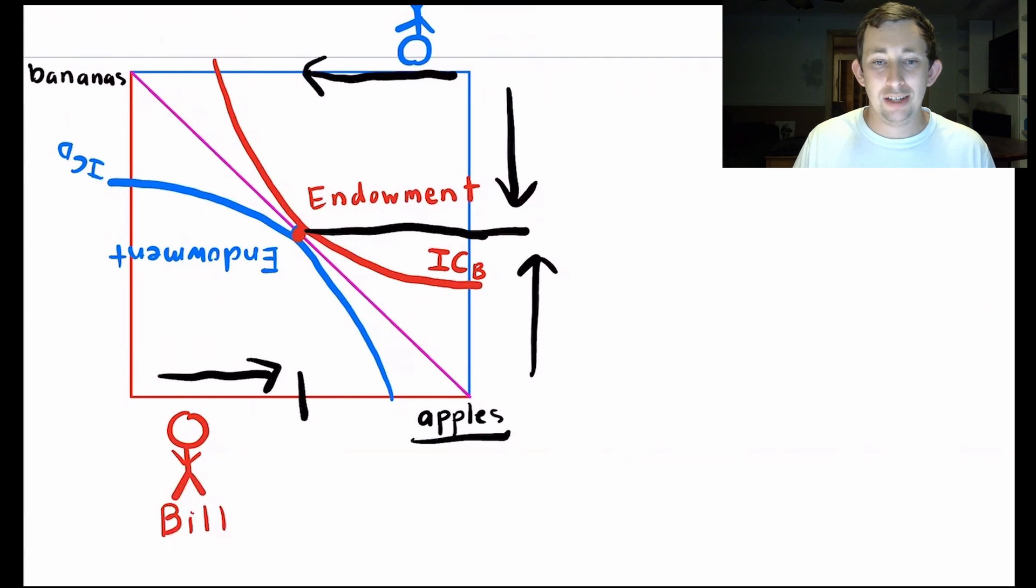So that is how I can determine how big my Edgeworth box should be. I know that the corners should be the total number of the two goods between the two of them. So I add them up.